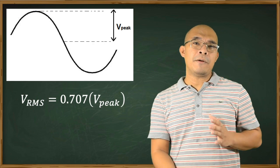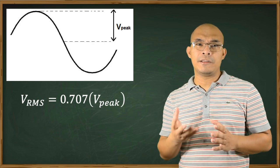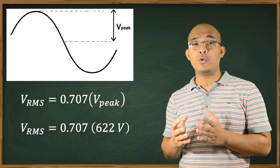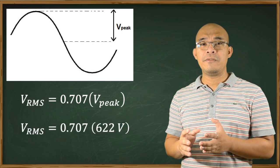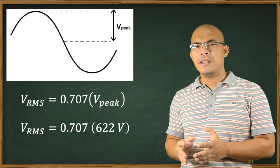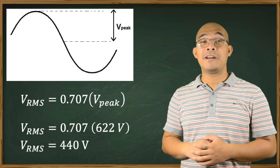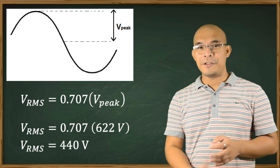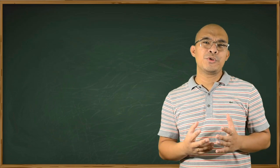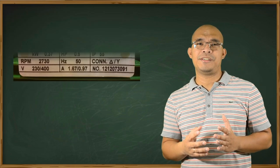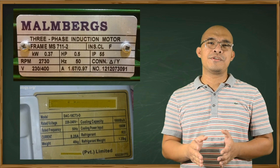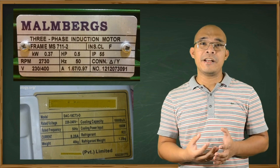The RMS voltage can be computed as 0.707 multiplied by the peak voltage. Meaning, if the peak voltage generated by an alternator is 622 volts, the effective or useful voltage is only around 440 volts RMS. Also, almost all equipment such as rice cookers, refrigerators, flat screen TVs, and electrical motors are rated using RMS voltage.